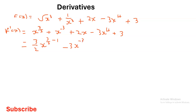For the 2x term, by the second law it simply comes back as 2. For the negative 3x to the power of 4 term, it becomes negative 4 times 3, giving negative 12, times x to the power of 4 minus 1. And the constant 3 becomes 0.